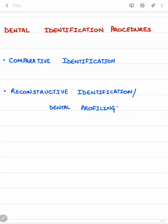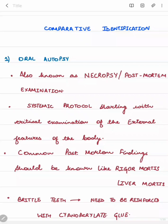There are two dental identification procedures. The first is comparative identification, used when we have some clue about the subject — we compare ante-mortem (before death) evidences with post-mortem (after death) evidences. The second is reconstructive identification or dental profiling, used when we have no clue about the deceased subject and must gather all information from the remains alone.